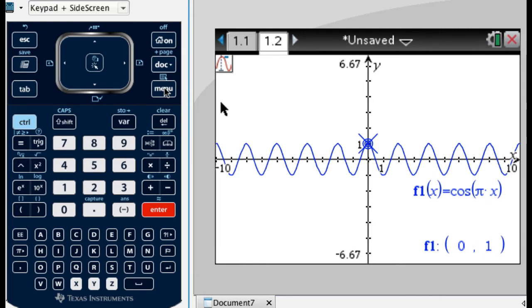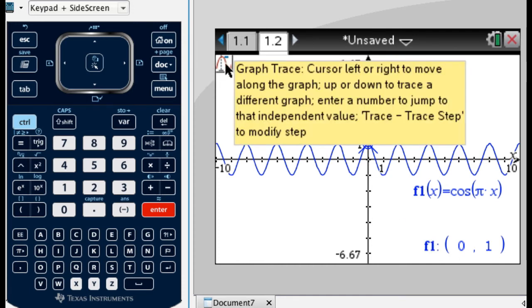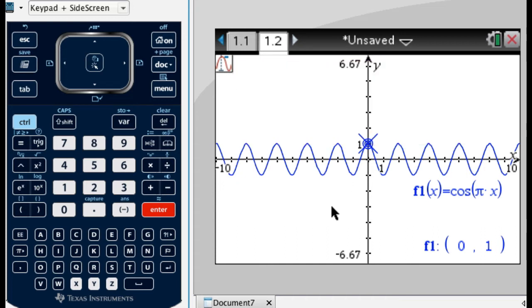And when you're graph tracing, you can actually just punch in an x-coordinate. So right now it's telling me that I'm at the ordered pair 0, 1. You can see up here, it's telling me that graph trace is enabled. If I type 0.5, it's going to bounce to where x is 0.5, which turns out to be 0. If I type 1, it's going to bounce to where x is 1, which turns out to be negative 1. These values are the same values that I got when I evaluated the function.